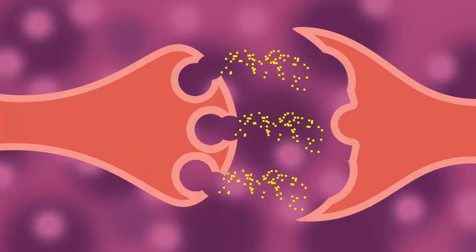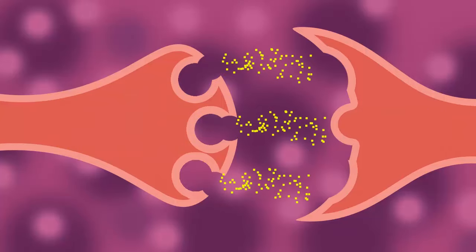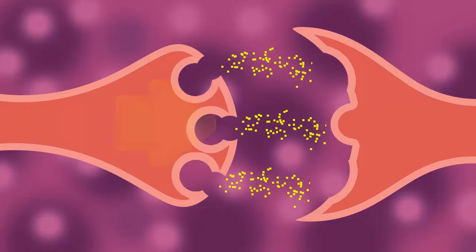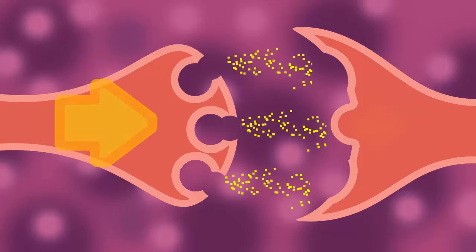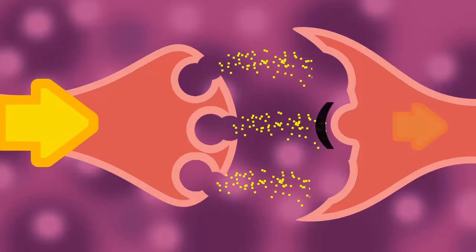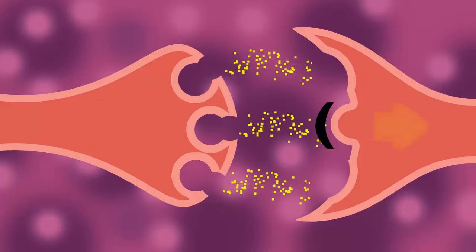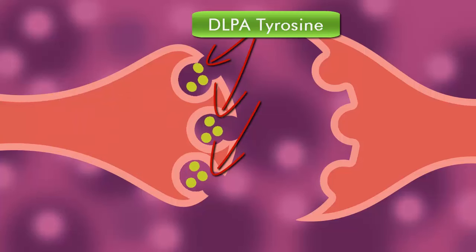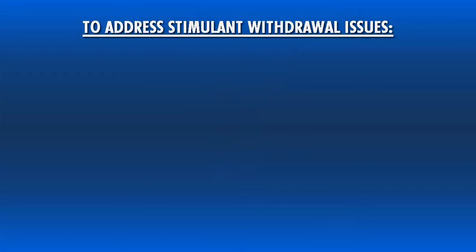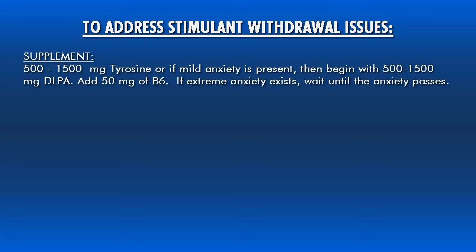Additionally, there is another mechanism called downregulation, where the receptors become less responsive and it takes more and more of the drug to exert an effect. In the case of dopamine, the dopamine receptors become dampened in their ability to transmit the perception of reward. The logical fix is to feed the nervous system what it needs, not spend what it doesn't have. To address stimulant withdrawal: supplement with 500 to 1,500 mg of tyrosine, or if mild anxiety is present, 500 to 1,500 mg of DLPA. Add 50 mg of B6. If extreme anxiety exists, wait until the anxiety passes before using these methods.